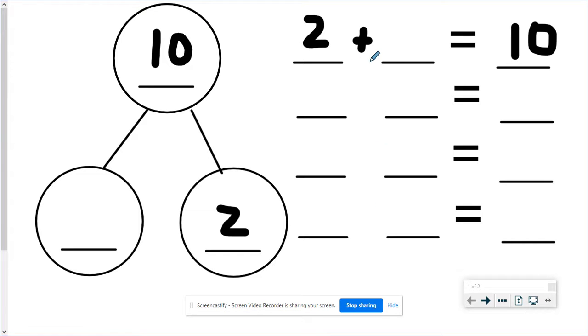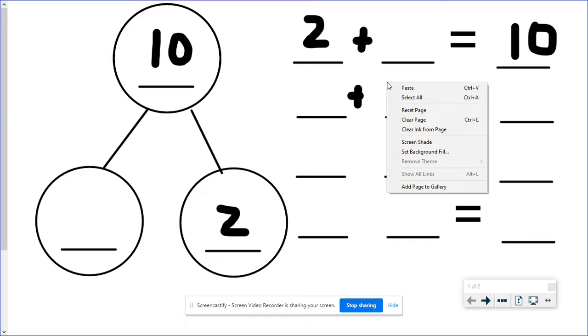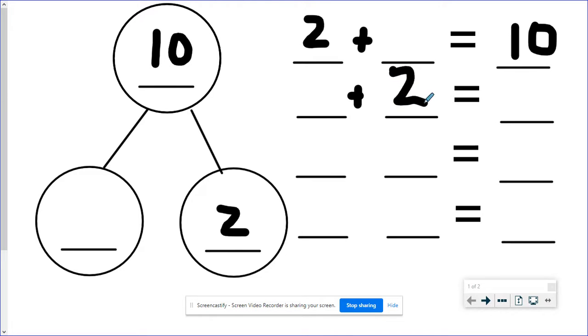So if 2 plus an unknown number equals 10, then that unknown number plus 2 also equals 10. Flip-flop property. Sorry, that 10 looks crazy. But the flip-flop property or the commutative property tells us that we can add addends in any order and we will still get the same sum. Okay. So there are two addition sentences.